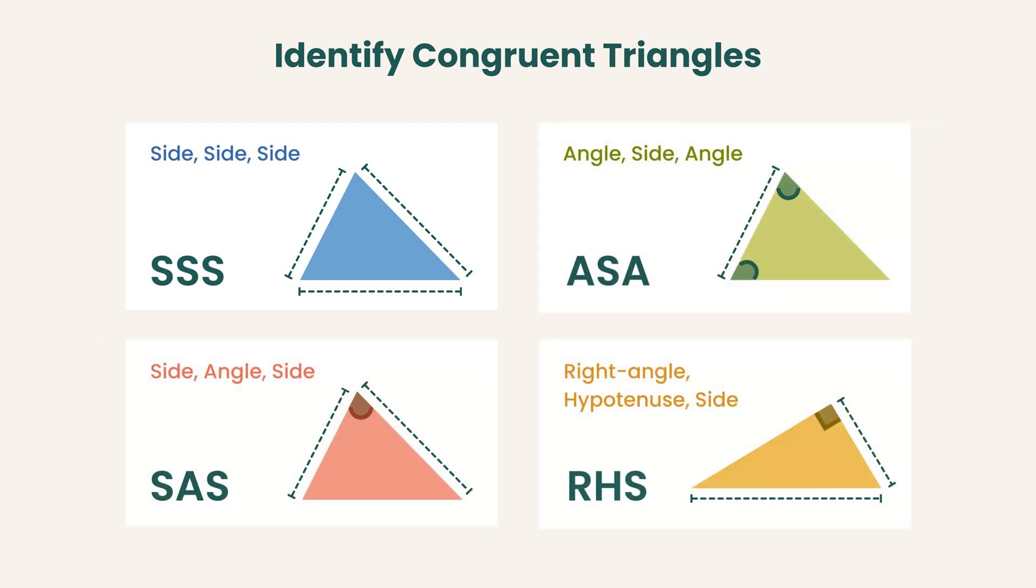In summary, if you identify any of these four cases, you can be confident that the two triangles are congruent.